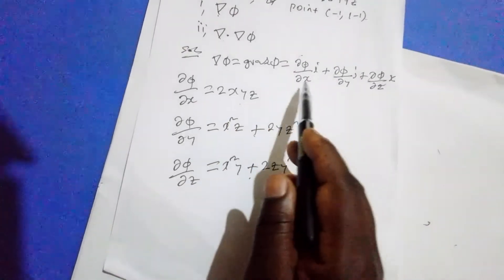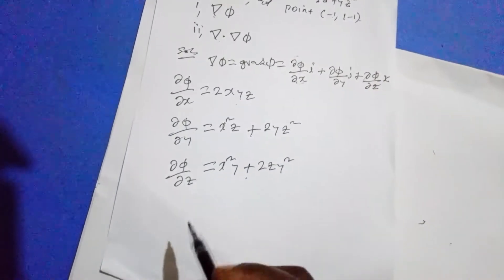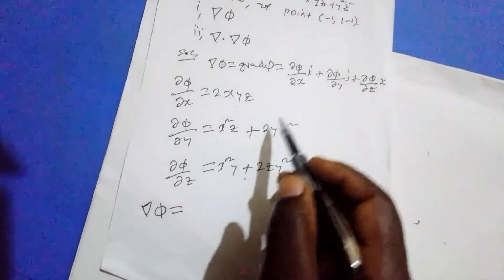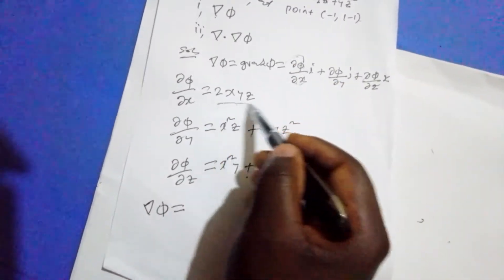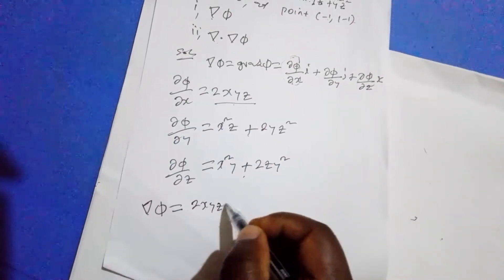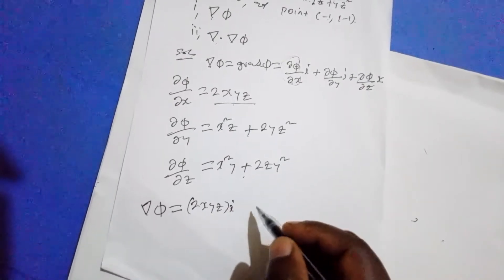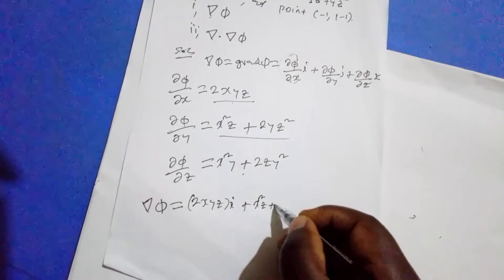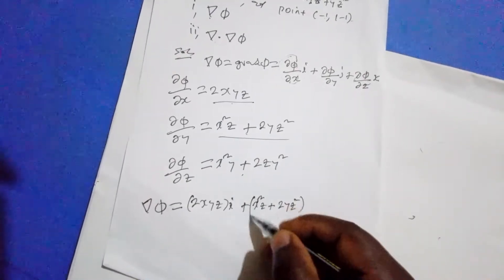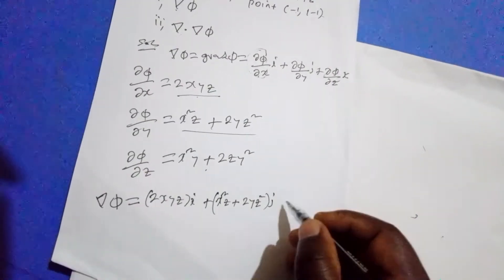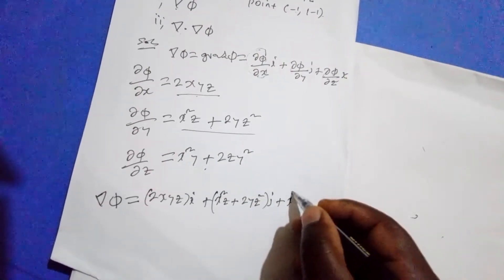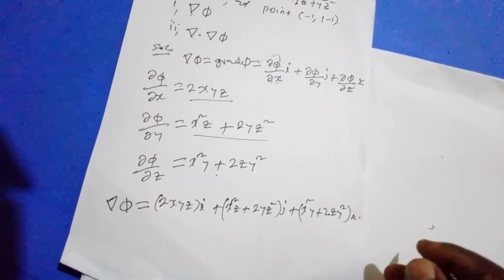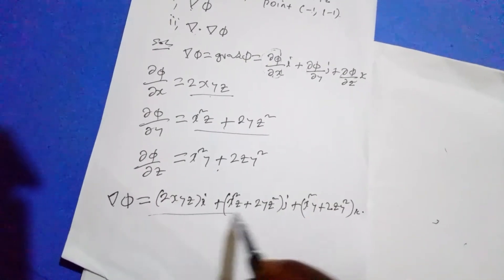So once we have those partial derivatives, we now replace them into the gradient expression. The gradient of the function equals 2xyz times i, plus x squared z plus 2yz squared times j, plus x squared y plus 2zy squared times k. So this will be the gradient of the function.